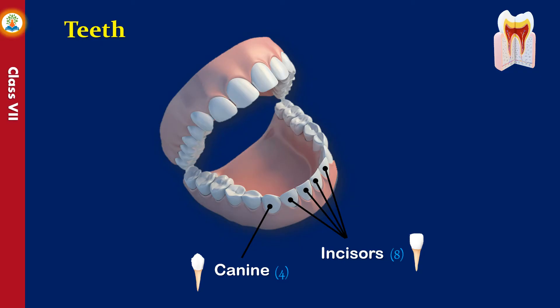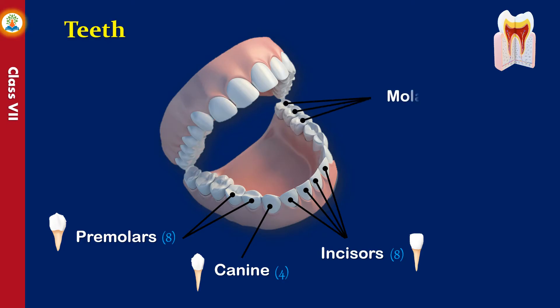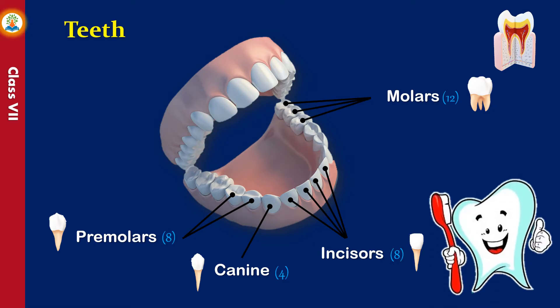Canines have the longest root of any tooth. Premolars are located behind and adjacent to the canines and are designed to crush and grind food; there are eight premolars in the oral cavity. Molars are the most posterior teeth in the mouth; they have broader and flatter surfaces with four to five cusps and the largest crown of any teeth; they are designed to grind food. The care of teeth is very important because when we eat, food particles remain stuck between or on the teeth, and if not removed, form dental plaque which consists of thousands of bacteria.